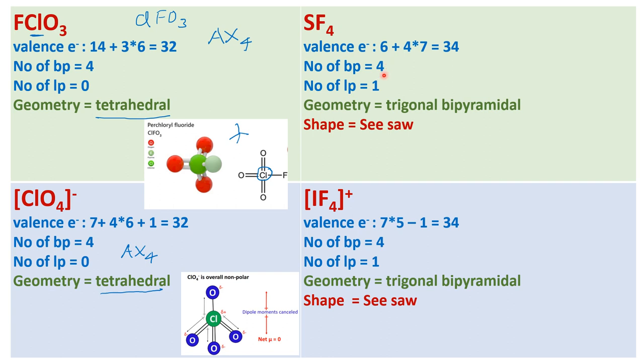Now coming to SF4. Here we see the bond pairs are four in number and there is one lone pair. Together, the parent geometry is of the type AX5. If it is of AX5, the parent geometry is trigonal bipyramidal.